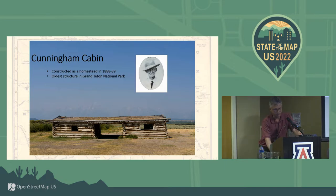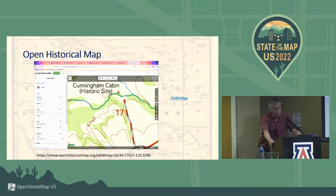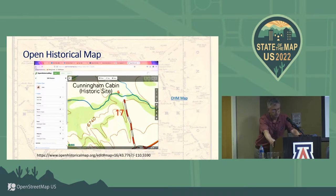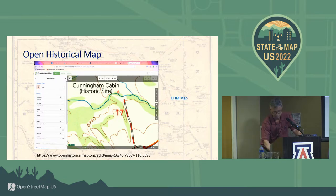The question becomes: how do you put something like this on a historical map? It's pretty much the same as adding it to OpenStreetMap — the iD editor is available at a different URL, and you need a separate login for OpenHistoricalMap, or you can use the JOSM editor. Tagging is the same. The main difference between OpenHistoricalMap and OpenStreetMap are two tags: start date and end date. I added a start date of 1888 to this cabin site. It's still standing, so there's no end date in this case.